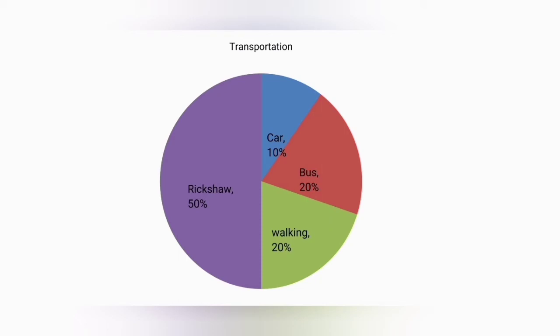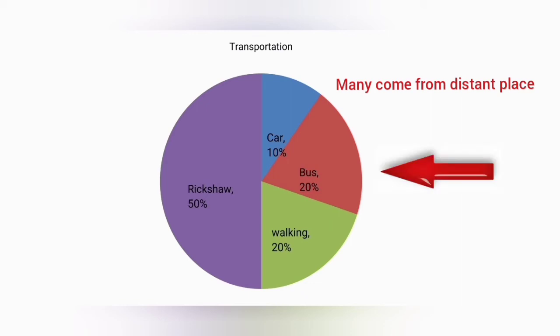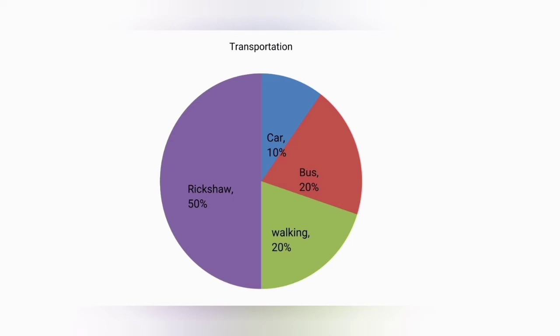It is also found that many students come to school from a distant place, and they use bus for transportation. It could also be said that some students live near their school area, so they can come to school by walking.